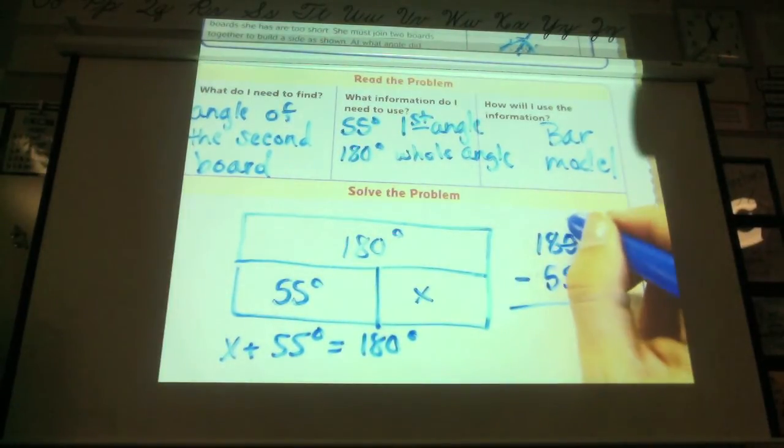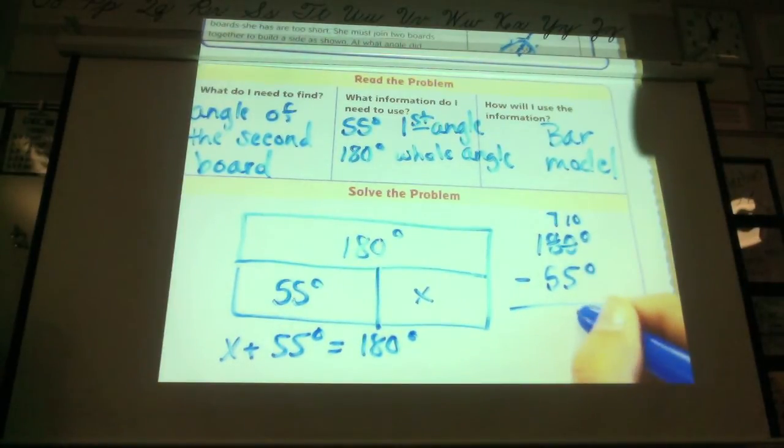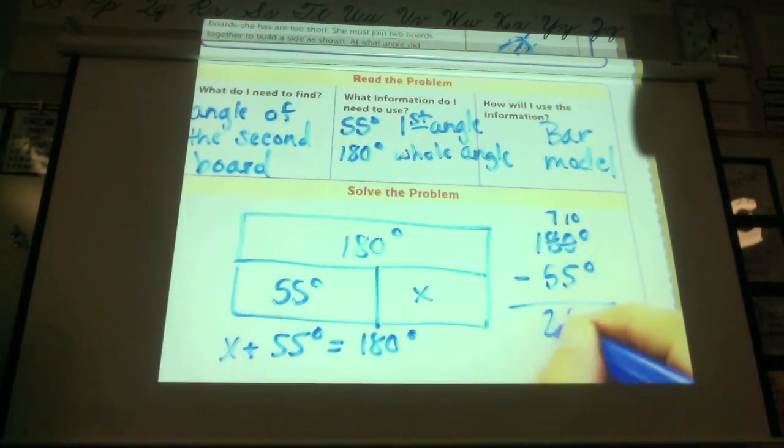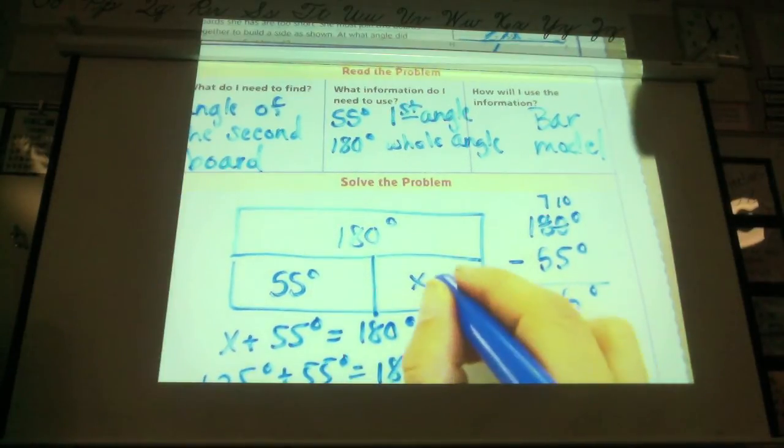Okay. I'm going to regroup that to 10 and regroup that to 7. So, 10 minus 5 is 5. 7 minus 5 is 2. Bring down the 1. And I have 125 degrees plus 55 degrees equals 180 degrees. And now I know that my X is 125 degrees.